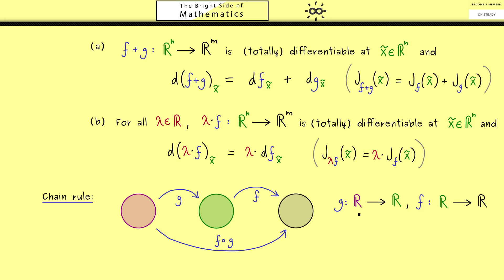First let's recall what the chain rule says when we have functions from ℝ to ℝ. The question is what is the derivative of f after g at a fixed point x̃, which lies on the left hand side. The chain rule says you can calculate this derivative using the other derivatives of f and g, assuming both exist at the given point. Specifically, take the derivative of f at the point g(x̃) and multiply it with the derivative of g at the point x̃ — it's just a multiplication of two derivatives.